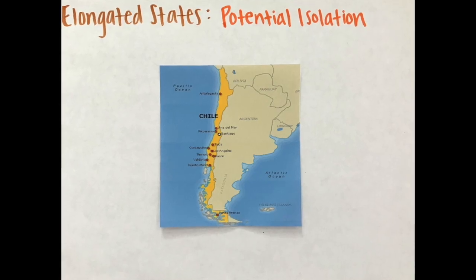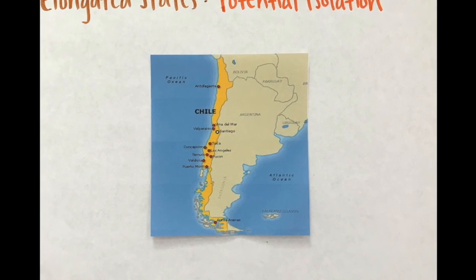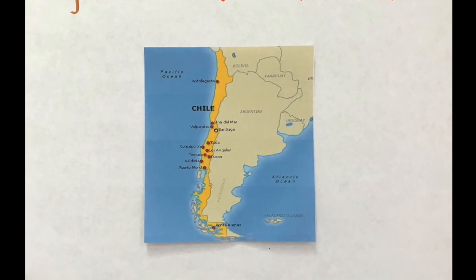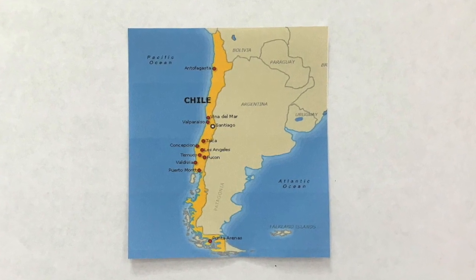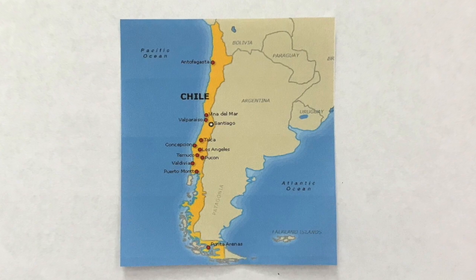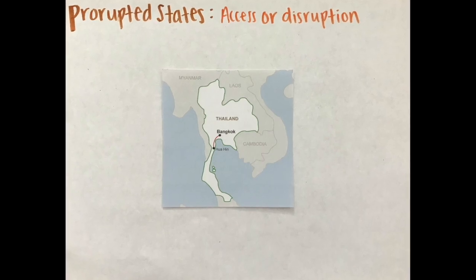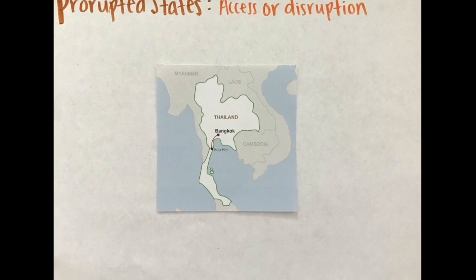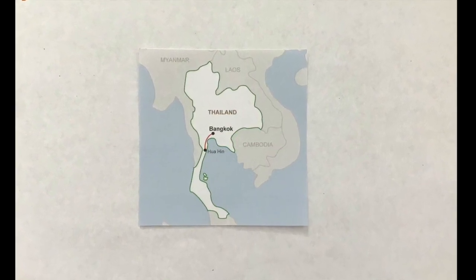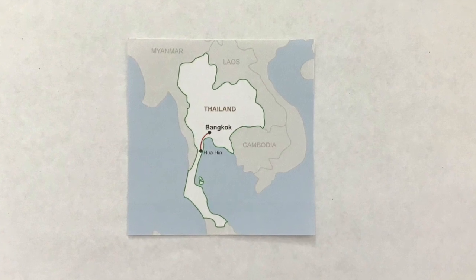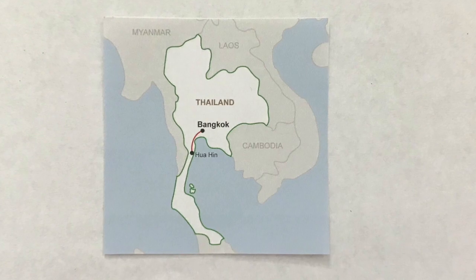A handful of elongated states have a long and narrow shape, like Chile. Elongated states may suffer from poor internal communications; a region at an extreme end of the elongation might be isolated from the capital, which is usually placed near the center. An otherwise compact state with a large projecting extension is a prorupted state. Proruptions are created for two principal reasons: to provide a state with access to a resource such as water, and to separate two states that otherwise would share a boundary.